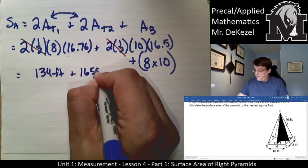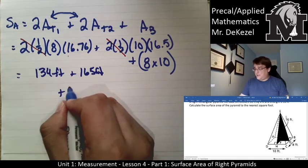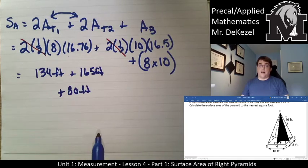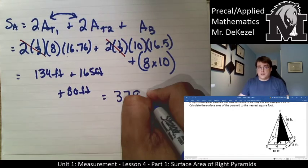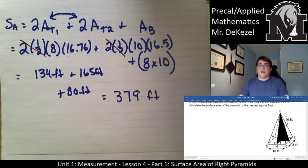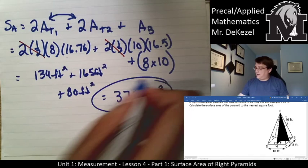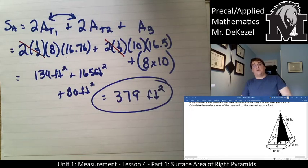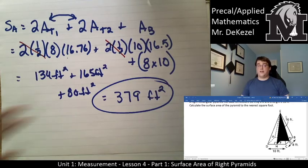We add that all up for a total of 379 feet squared. It is important when we talk about area that we keep our units squared and write the final answer with the squared unit.